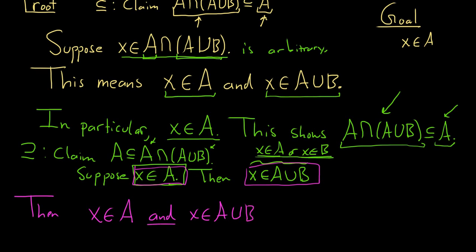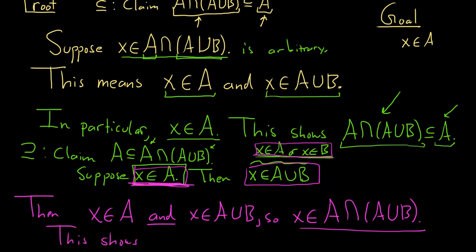Well, what does and mean? And means intersection. So this means that X is in A intersected with A union B. So a little bit tricky, because you start with just this, and you somehow have to magically produce the union. So just use the definition of union. And then we have that it's in both. So we took an element in A, and we showed it's in here.